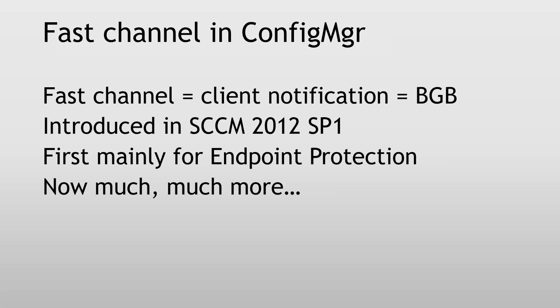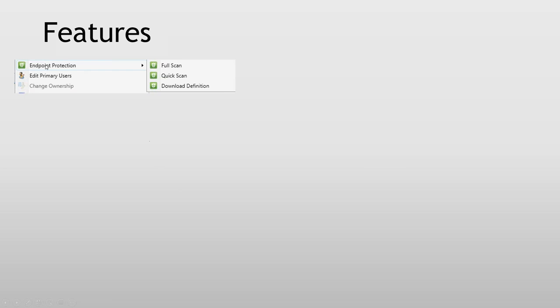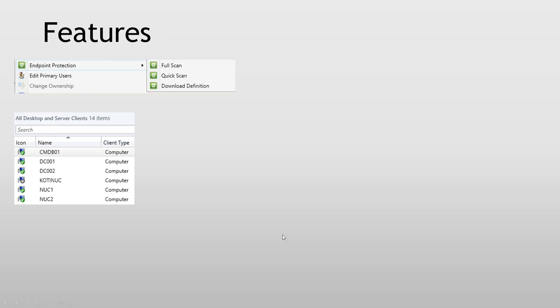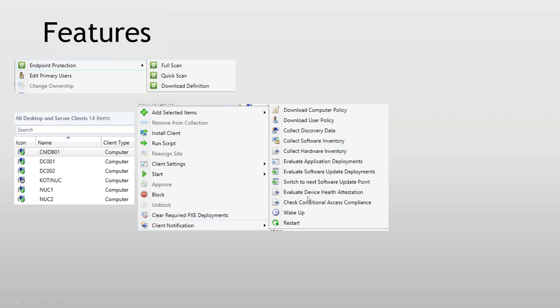So these are the features we had to start with. We had endpoint protection — we could initiate full scan, quick scan, and download definitions if needed. They will report back any virus or malware found as well. Now we get the icon saying that the client is actually alive — that's also done through this channel. We have all these nice new features in client notification, using the same channel. We can use Run Script and we can use Start CMPivot as well. And actually the next feature we'll talk about — installing applications — will also use the fast channel.